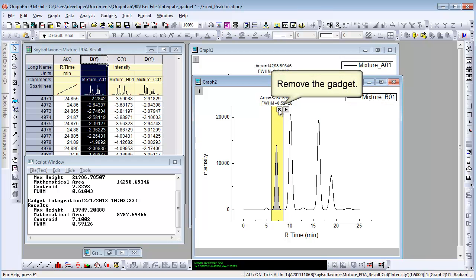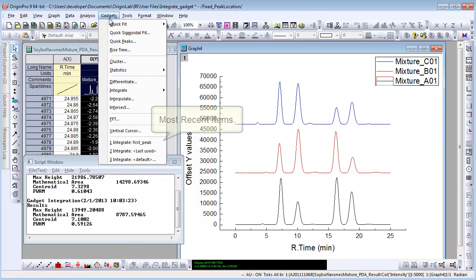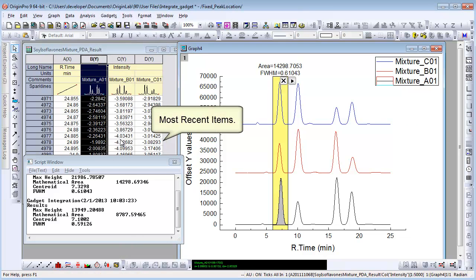Removing the gadget is easy. Just click the X button. Here is a graph with multiple data plots. Let's load the gadget from most recently used items list.